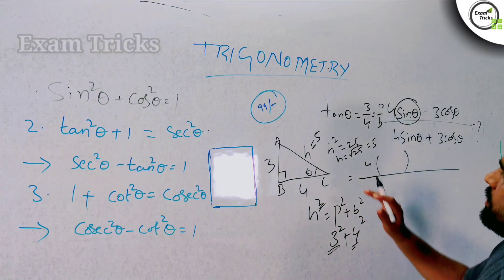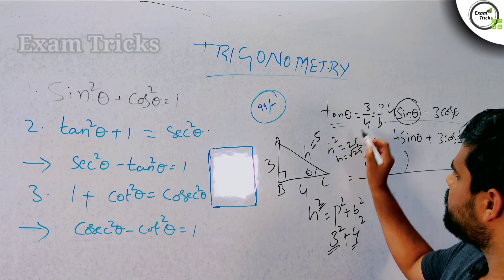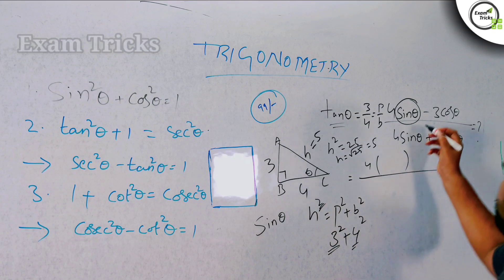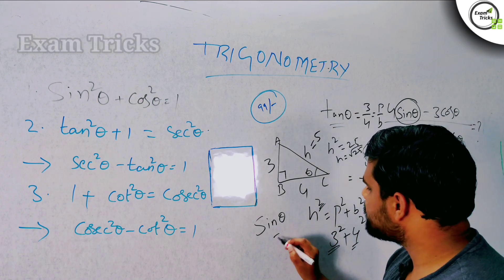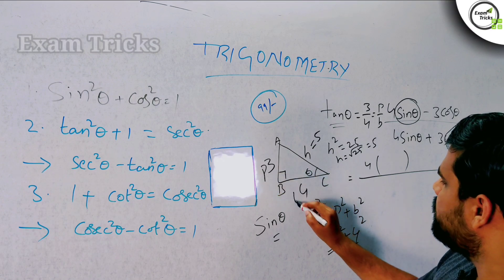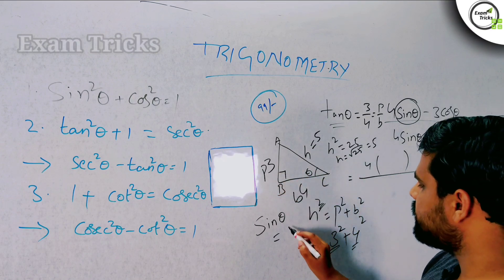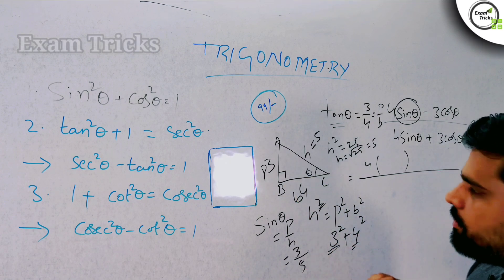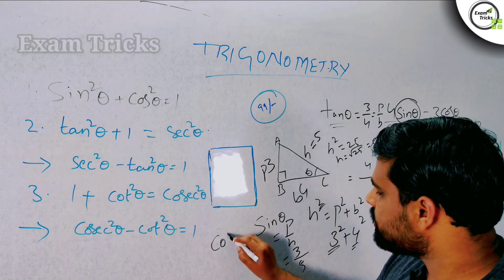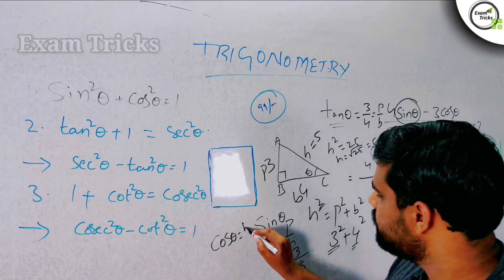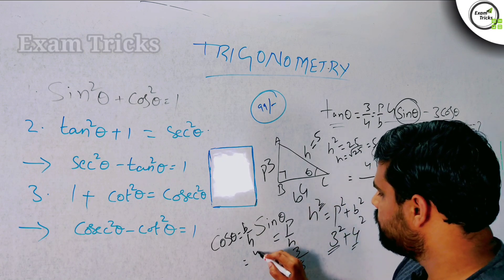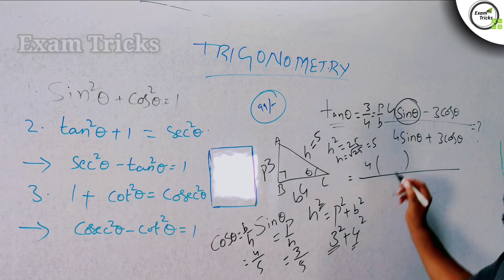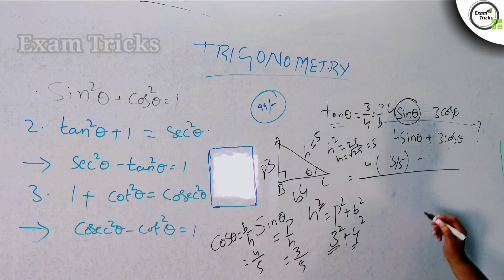So h is 5. Now with tanθ equal to 3 by 4, we can find sinθ and cosθ. sinθ equals P by H equals 3 by 5. cosθ equals B by H equals 4 by 5. So sinθ is 3 by 5 and cosθ is 4 by 5.